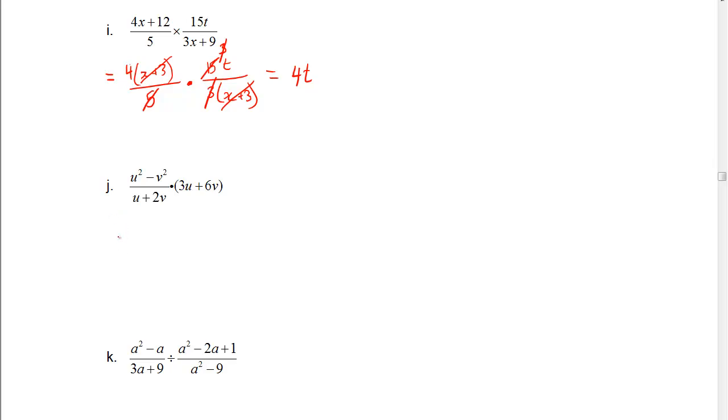For problem j, we're going to factor the numerator. So that's u minus v times u plus v, that's a difference of squares, over u plus 2v. Multiply that by 3 outside of u plus 2v, common factor of 3, and we can put that over 1 if you like, just to make it look easier, although that's not necessary.